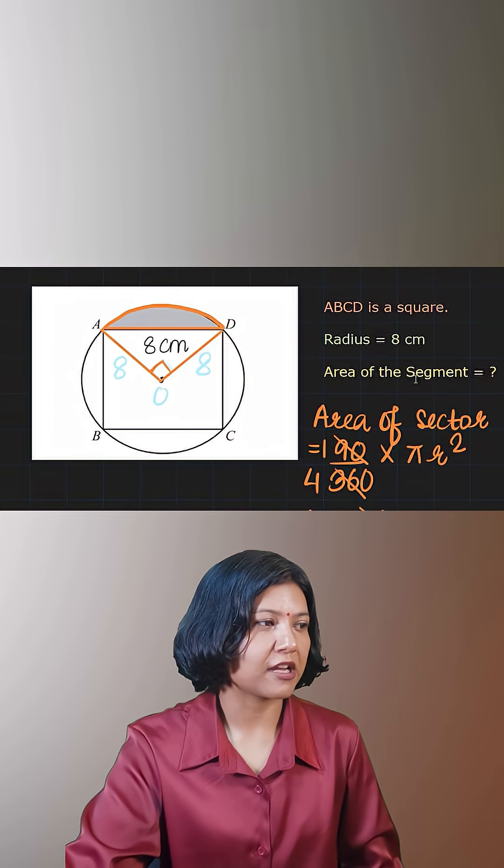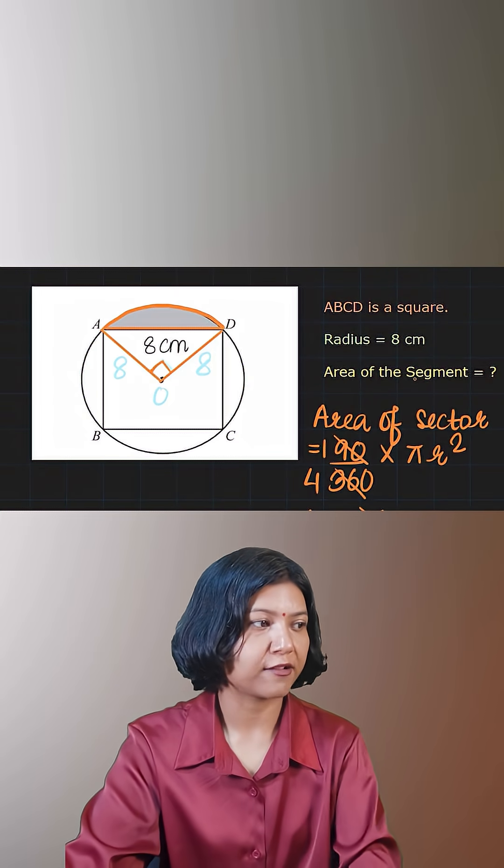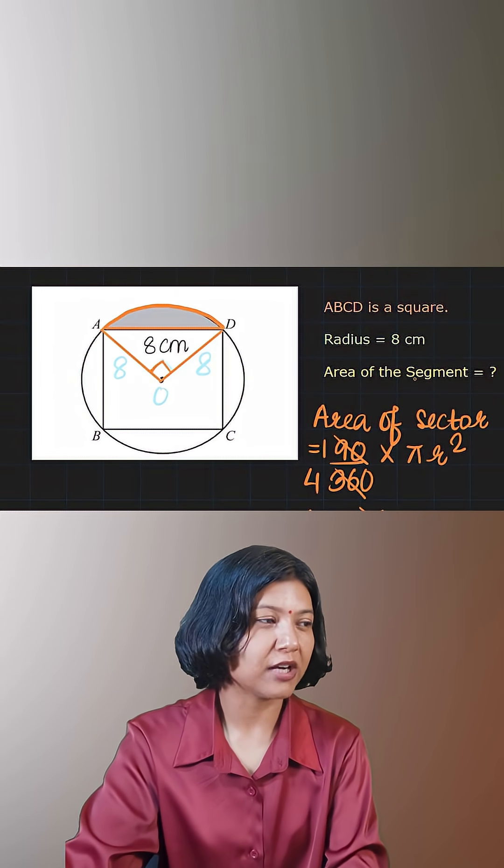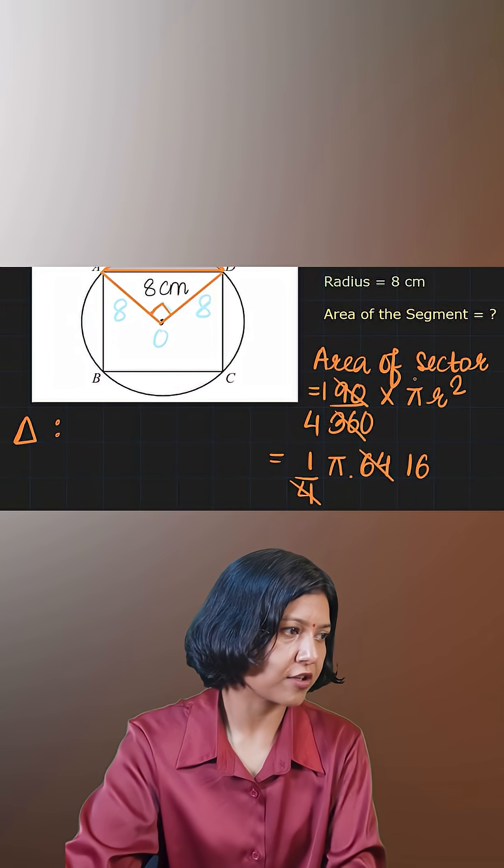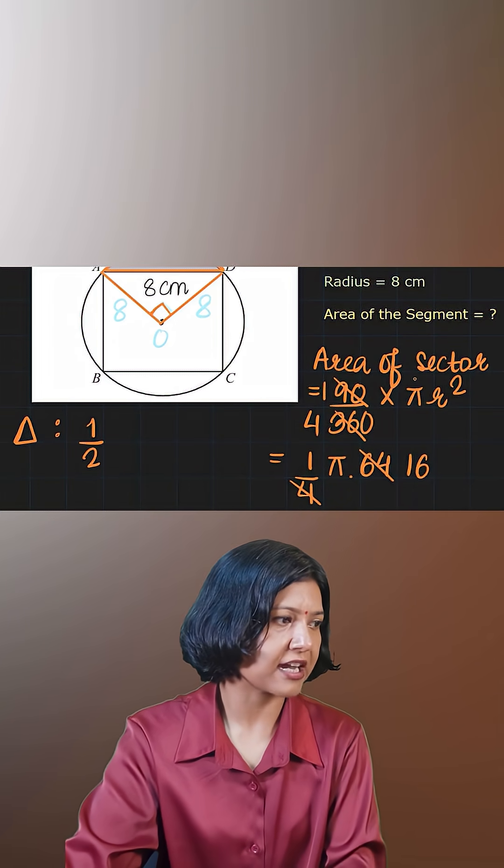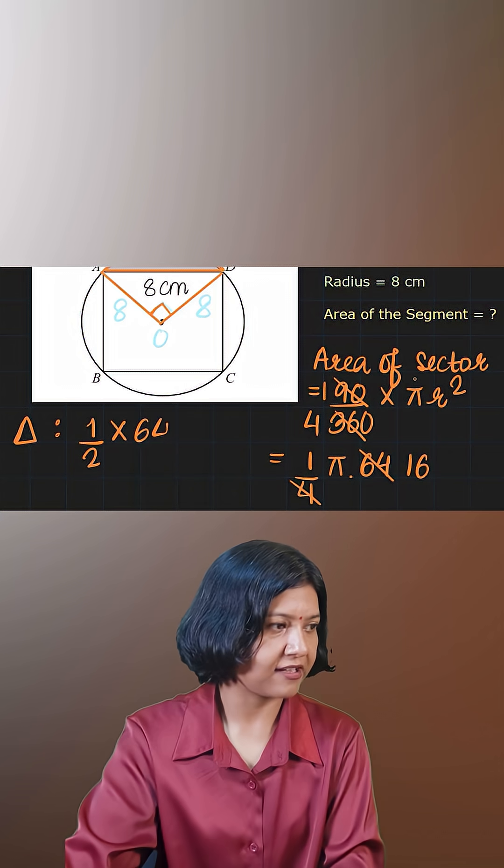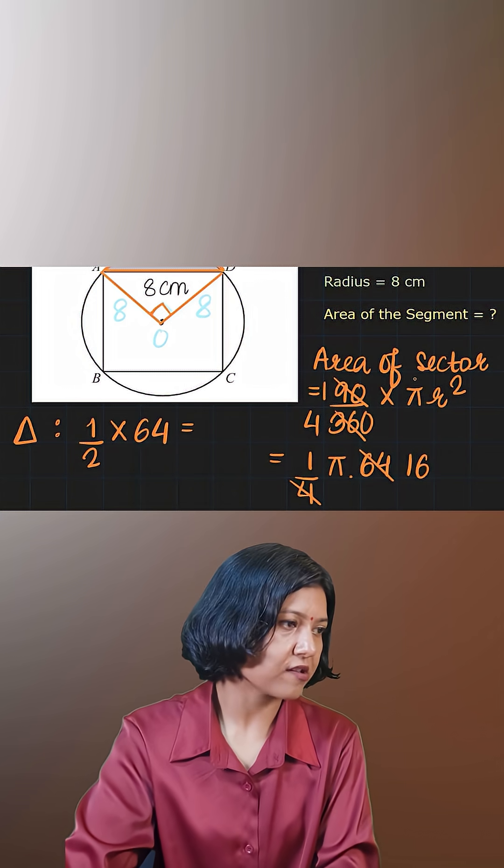Now what we really want is the area of the triangle. Now triangle being a right angle triangle, I can simply do half times base times height. So for the triangle part, the area is found out by doing half times 8 times 8. Again, 8 times 8 is 64. Half of 64 is 32.